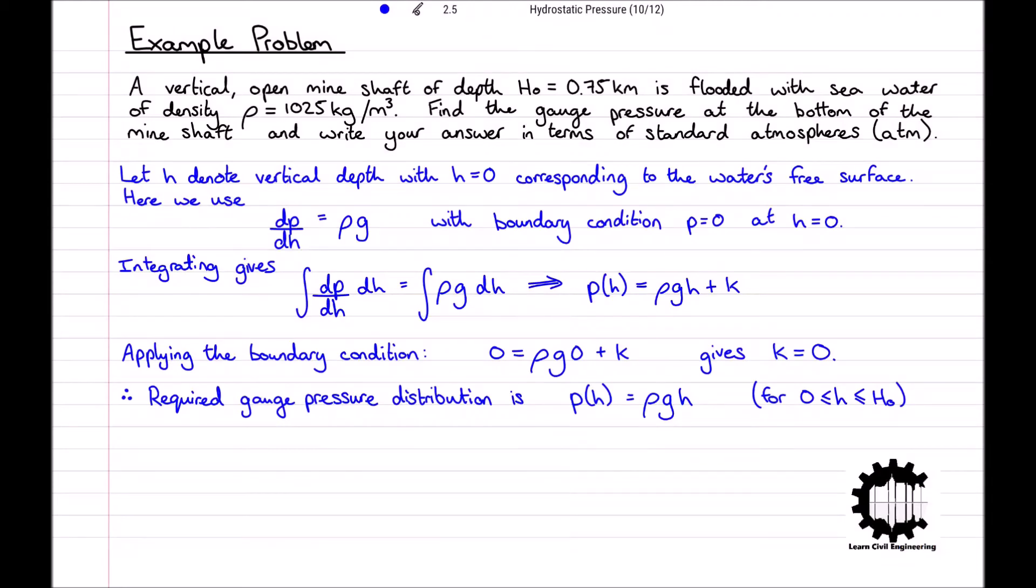We will now use this to find the gauge pressure at the base of the flooded mine shaft. Substituting h equals h0, which equals 750 metres, and rho equals 1025 kilograms per metre cubed gives p equals 1025 times 9.81 times 750, which is equal to 7.54 times 10 to the power of 6 newtons per metre squared.